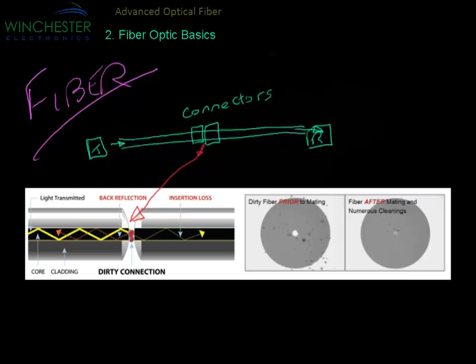You can see an end view of this connector where the light is going down the core of the connector, and these dirt particles are around the core. If one of the particles gets in front of the core, it will stop the light from coming through.